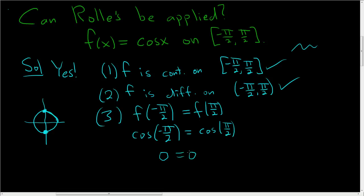So it's 0 equals 0, which is true. So all three conditions check. So the answer is yes. Rolle's theorem can be applied. What does that mean? That means there's a number somewhere here where the derivative of this function is equal to 0. And I hope this helps someone out there.